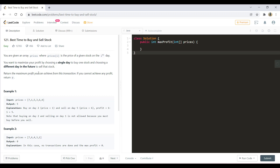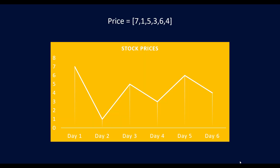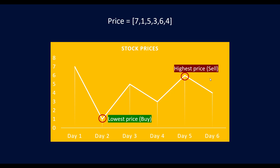So let's see how we can solve this question. Here is the price array given to us in example number 1. If we map it down into a chart, it will look like this. On day 1, the price of the stock was 7; on day 2, it was 1; on day 3, it was 5, and so on.